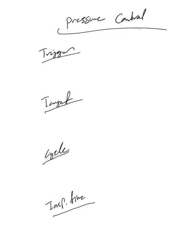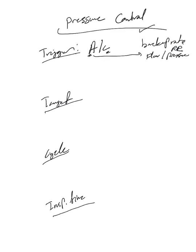This is pressure control. If you're watching this for the first time, please go back and watch the previous videos in order to understand what we're talking about. The trigger, by default, is assist control. With assist control, we have to provide a backup rate — the respiratory rate set on the ventilator — and a patient trigger, which can be flow or pressure trigger for the assist, and the backup rate for the control.